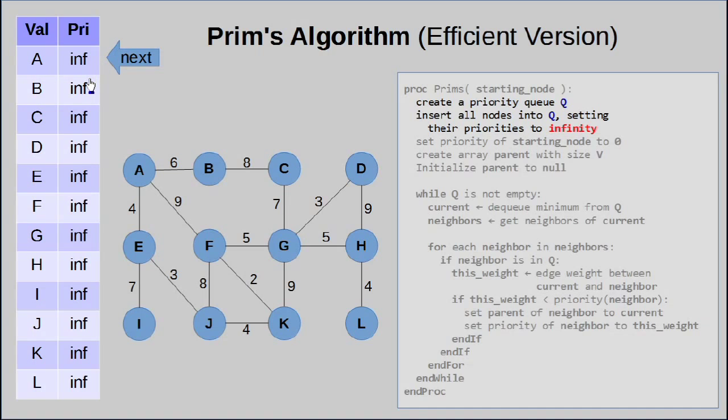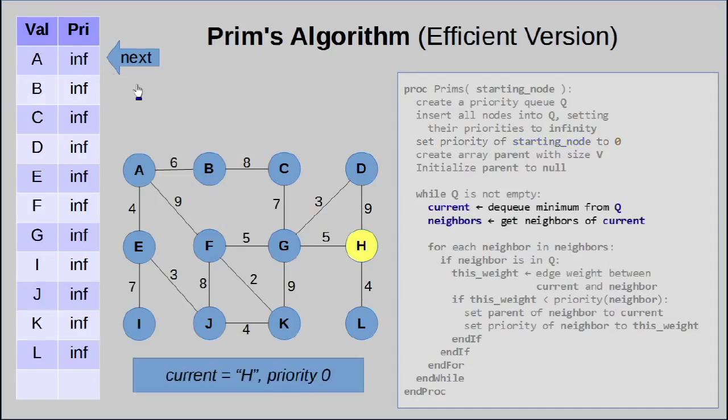Now I have this arrow saying next here. This is just to tell you that this is the top of the queue. Every time we say we want to dequeue the minimum from the priority queue, this will be the element that comes up. So right, next step. We want to actually set the priority of the starting node, which is H, to 0. As you can see, setting it to 0 bumps it all the way to the top of the priority queue. That is intentional. That is by design, because that's the whole point. We want to get things with the smallest priority first.